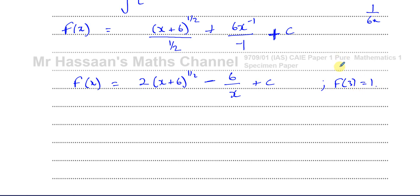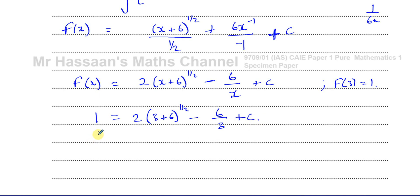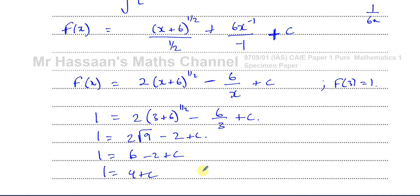We're going to use f(3) = 1 to find c. Substituting x = 3: 1 equals 2 times (3+6) to the power of a half, minus 6 over 3, plus c. So 1 equals 2 times 9 to the power of a half, minus 2, plus c. The square root of 9 is 3, so 1 equals 2 times 3, which is 6, minus 2, plus c. Therefore 1 equals 4 plus c, which gives c equals negative 3.